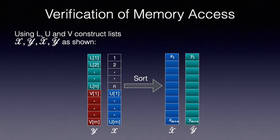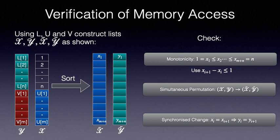To verify correct memory access, we construct four vectors of size N plus M. The vector X is obtained by appending the vector U to the vector 1 to N. Similarly, vector Y is obtained by concatenating vectors L and V. We interpret the first N entries in lists X and Y as loading the entries of L against the memory locations 1 to N. That is, L of I is loaded at location I. We interpret the final M entries as fetch operations. That is, the value VI is fetched corresponding to location UI. From literature on memory checking, we can verify that the fetch operations are consistent with the loading operations by simultaneously permuting the vectors X and Y by the same permutation to obtain vectors X tilde and Y tilde such that X tilde is in increasing order.